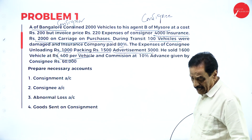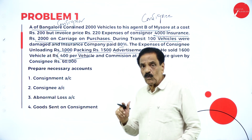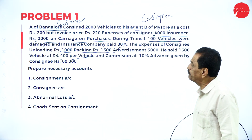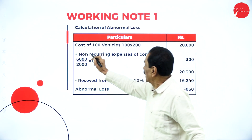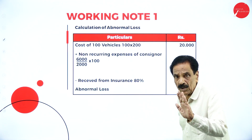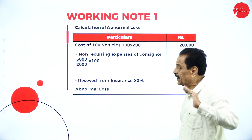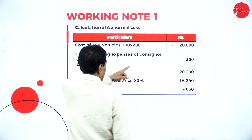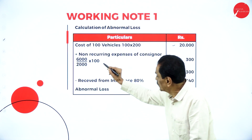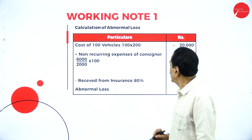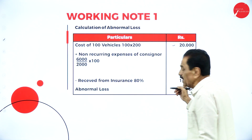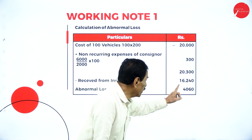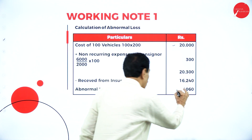Working Note 1: Abnormal Loss. How many vehicles were lost? 100 vehicles. The cost of 100 vehicles: each vehicle costs Rs. 200, so 100 × 200 = Rs. 20,000. The non-recurring expense of the consignor totals Rs. 6,000 for 2,000 vehicles; for 100 vehicles it comes to Rs. 300. Total cost = 20,000 + 300 = Rs. 20,300. The insurance company paid 80%, which works out to Rs. 16,240. Therefore, the abnormal loss is Rs. 20,300 − 16,240 = Rs. 4,060.